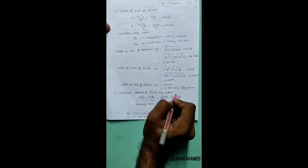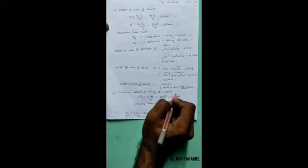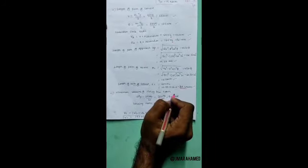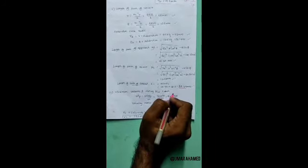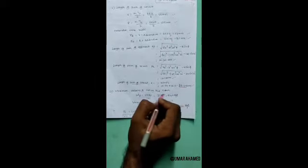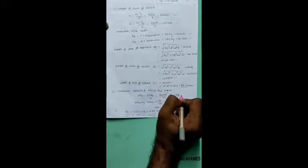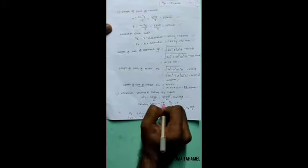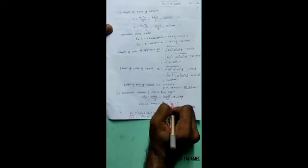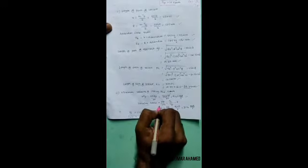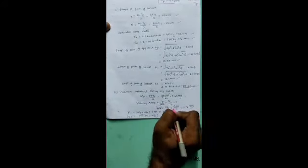Maximum velocity occurs in path of recess and path of approach. We compare the maximum values. Omega_P equals 2 pi N_P by 60, which gives 9.42 radians per second. Using velocity ratio Omega_P by Omega_G equals TG by TP equals 3, we calculate Omega_G.